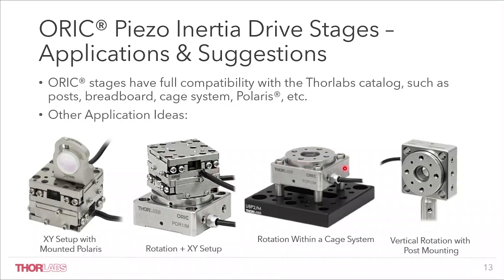The third photo shows the PD-R1 with four slots to accommodate the 16 mm cage system. With the central aperture, the PD-R1 can provide rotational motion inside the cage system. In the fourth photo, a post and PD-R1 can simply set up a tip-tilt rotation application.